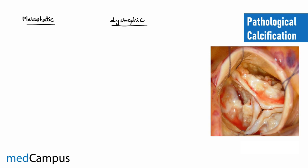Now let us look at the specific diseases associated with metastatic and dystrophic calcification, starting with metastatic. Since metastatic calcification is due to excess calcium levels, all causes of hypercalcemia can lead to it. The first classic example is hyperparathyroidism.